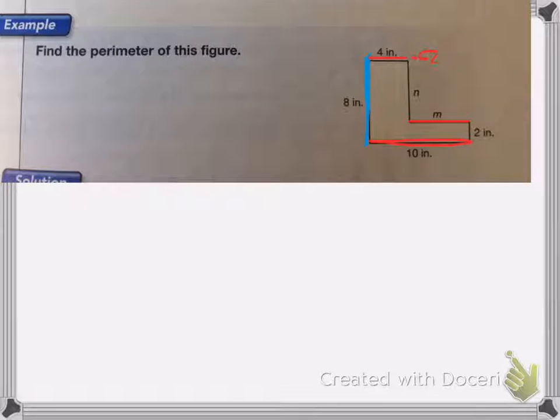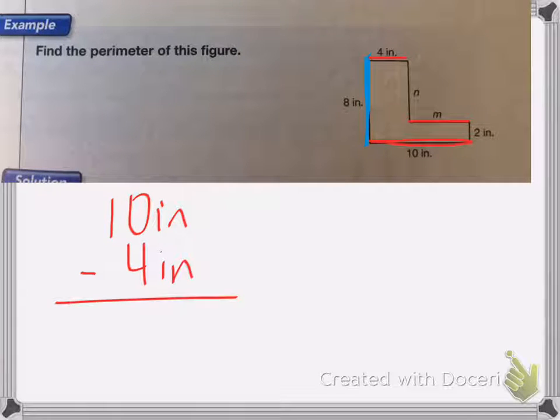So to figure out what M is, I'm going to take my 10 inches. I'm going to subtract 4 inches because that will give me M, what's left. So 10 inches minus 4 inches is 6 inches. So M is equal to 6 inches.